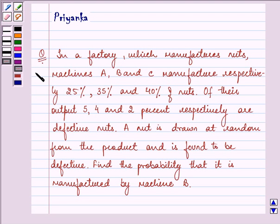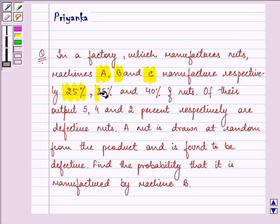Hello and how are you all today? The question says, in a factory which manufactures nuts, machines A, B and C manufacture respectively 25%, 35% and 40% of nuts.